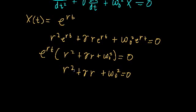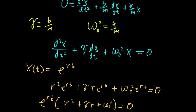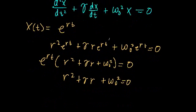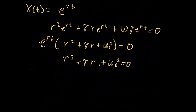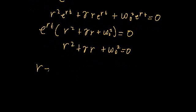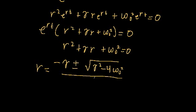So now we need to try and solve for r that will eventually, we'll find a value of r that will satisfy this differential equation. And this doesn't look immediately like factorizable. So let's try and use the quadratic formula. The quadratic formula says that r is going to be equal to negative gamma plus or minus the square root of gamma squared minus four times omega naught squared all divided by two.